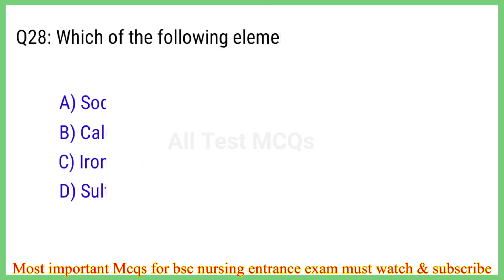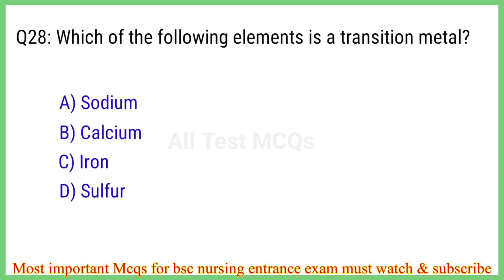Q28. Which of the following elements is a transition metal? The right answer is option C: Iron.